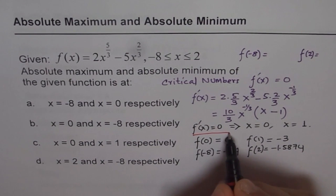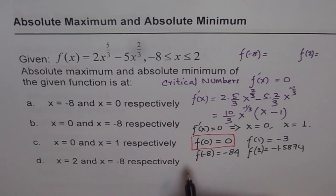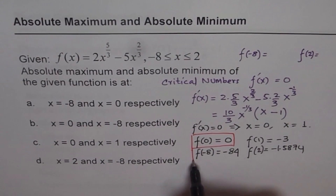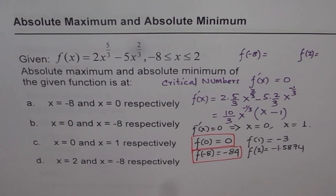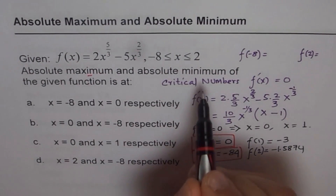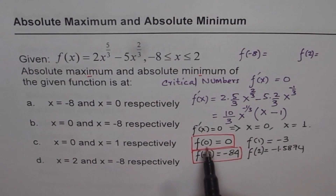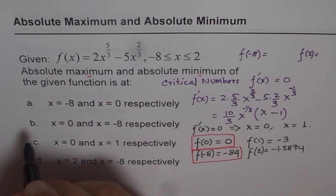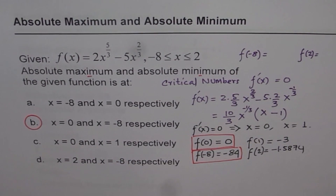All values are negative except f(0) = 0, so the maximum value is at x = 0 and the minimum value is at x = minus 8 where f = minus 84. Writing maximum first and minimum second, the answer is option B.